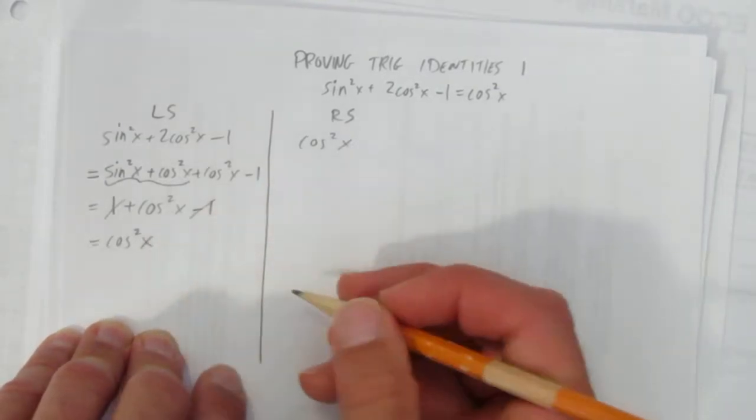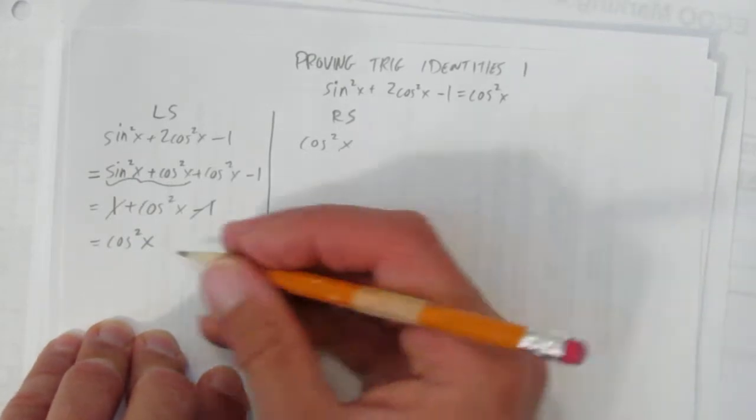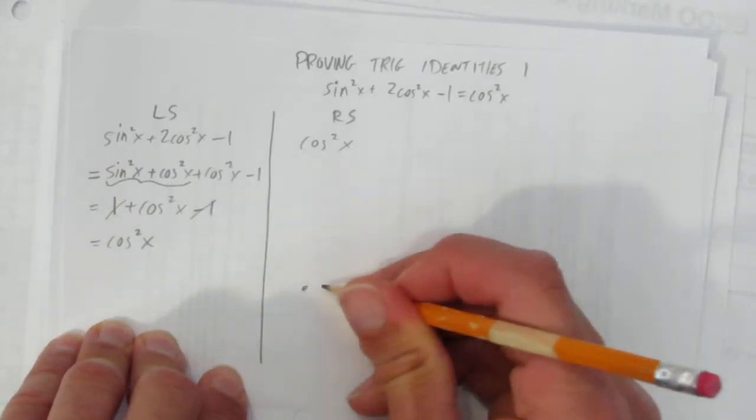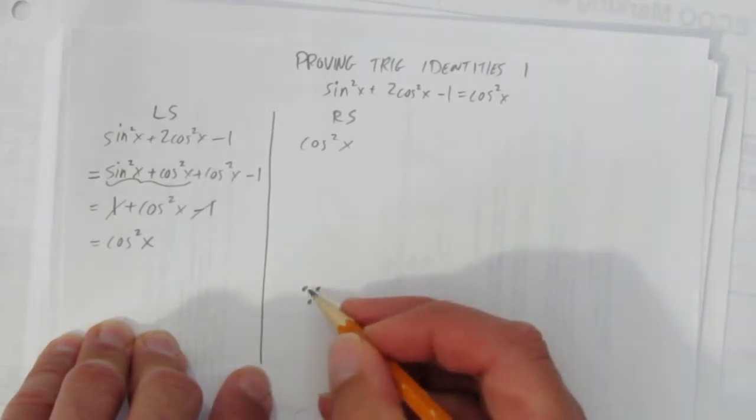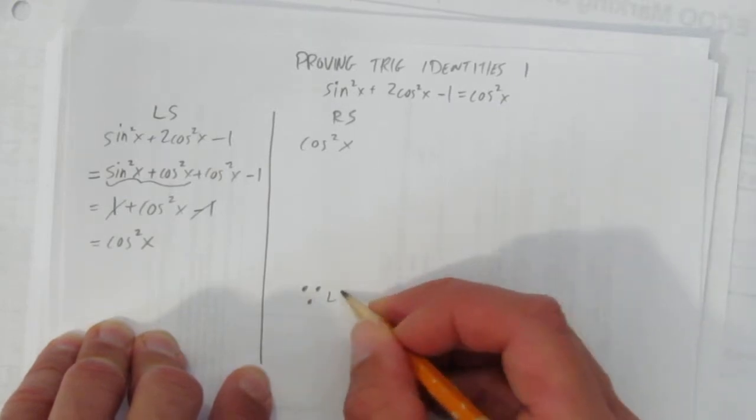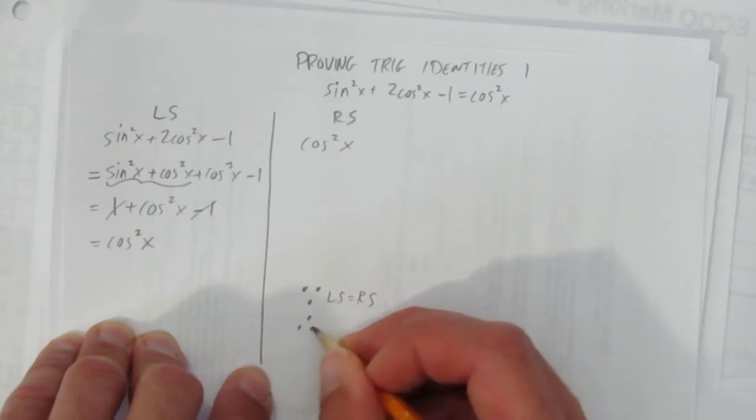But you have to write a statement to the reader. And here's what I'd like you to write. Here's the format I prefer. I've proven it by getting left side equal to right side. So I put an upside down therefore, it's pronounced since. This symbol upside down therefore is since. So since left side equals right side, therefore, proven true.